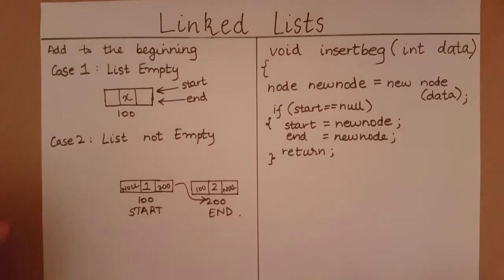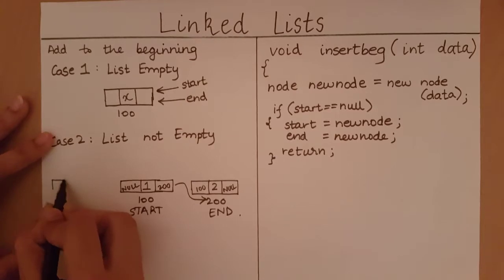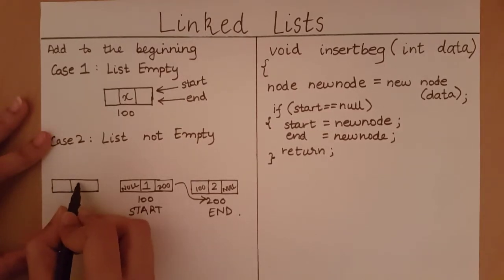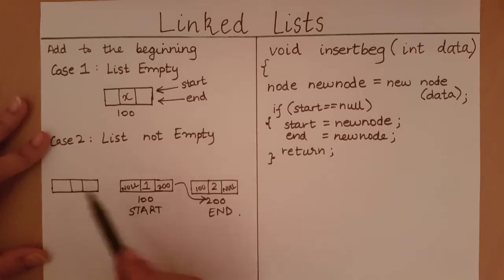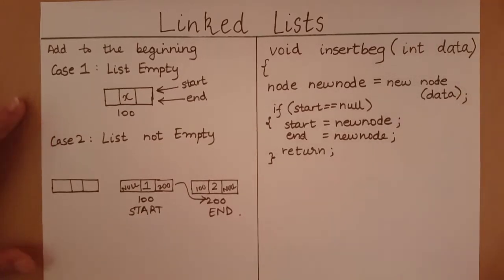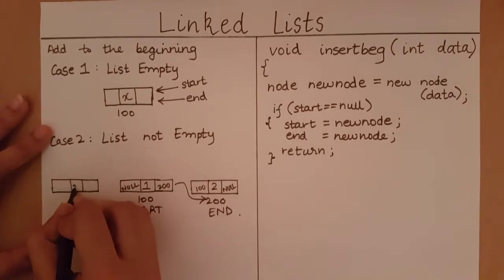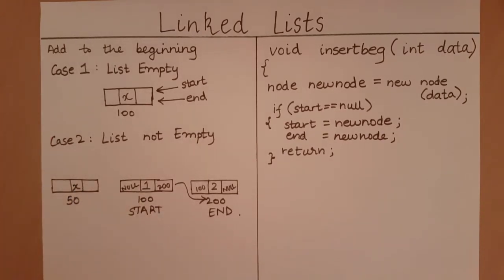When I want to add an element to the beginning of the list, what I mean is I want to add an element over here. So let's say I am going to add my element. I am keeping the element as x. This could be any number, whichever number is stored in the variable data. So I have created my new node here. Let's say it is at memory address 50.